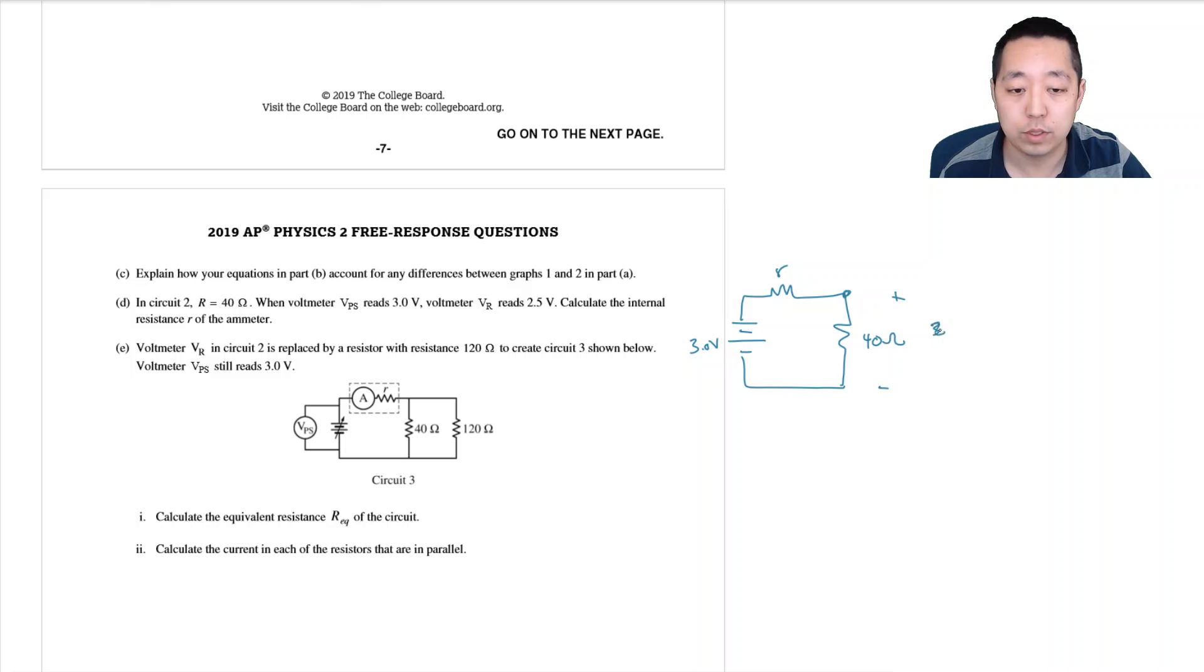So I know that the current here ought to be the current here right, because it's the same current that flows. So the current through this guy here is I is equal to V over R and that's equal to 2.5 volts divided by 40 ohms, that's 0.0625 amps.